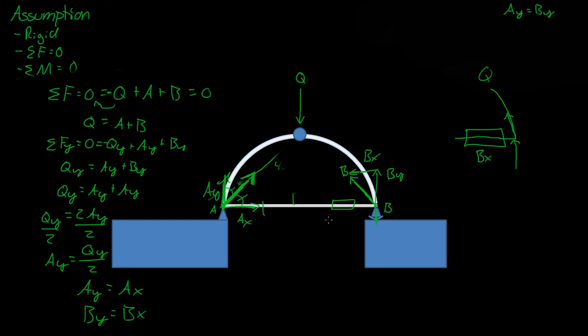So, if we know what BX is, then we know the tension within this beam, and BX, which is equal to BY, which is equal to AY, which is equal to QY over 2.